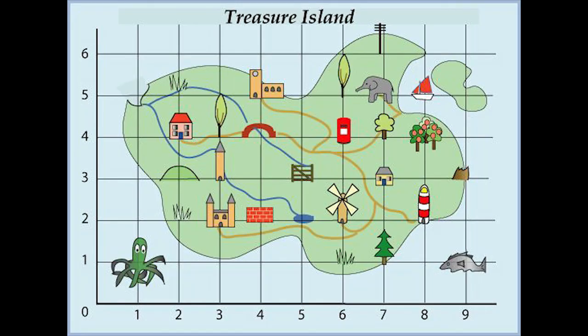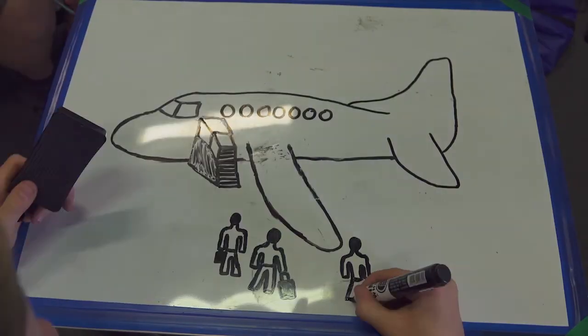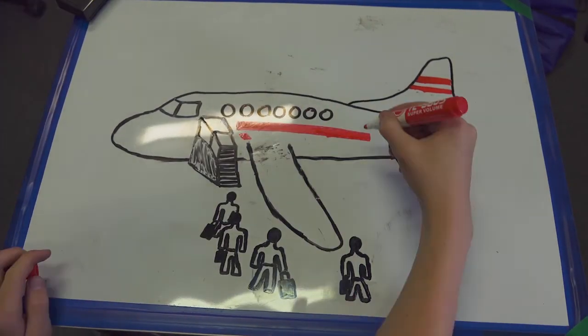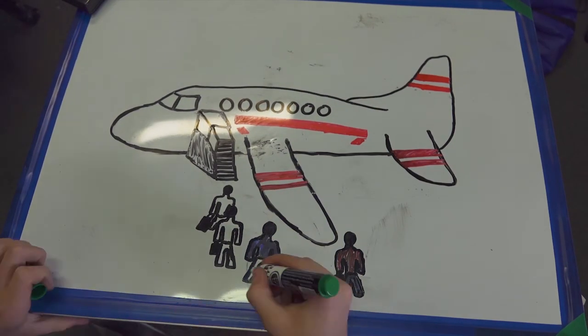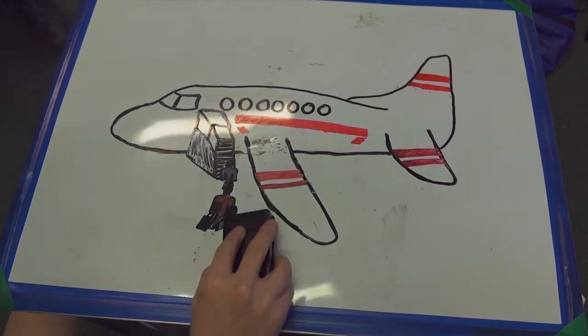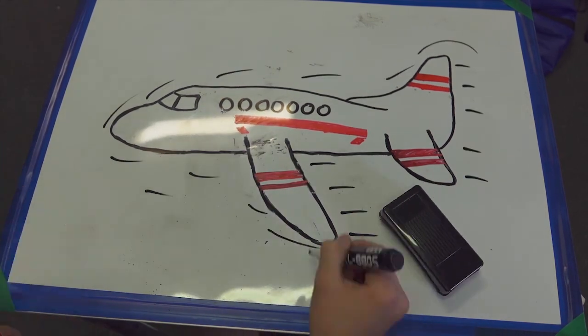Some examples of everyday uses of grid lines are when we go to the movies and have to find our seats. Scavenger hunts are also another way to use grid lines. We use grid lines when finding our seats on an aeroplane. I hope you enjoyed this video and learned something new about grid lines.